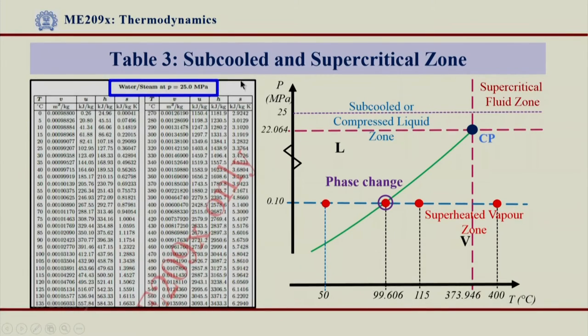And that is why you can see nothing has been given in the bracket. Till the pressures which are below the critical pressures, all this steam tables table 3 would give you T_sat_p value in the bracket over here.